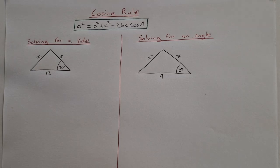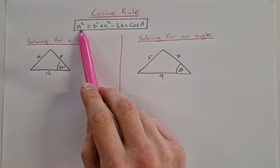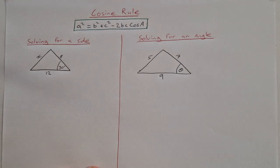Okay, so in this video we're going to take a look at a couple of examples of using the cosine rule. Just a quick reminder, the cosine rule is a squared equal to b squared plus c squared minus 2bc cos a and it's used for a non-right angle triangle.